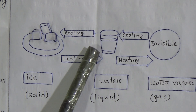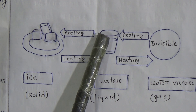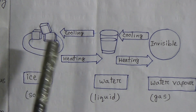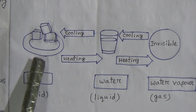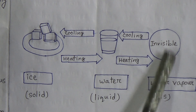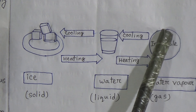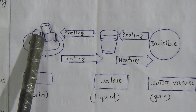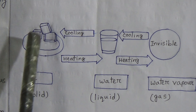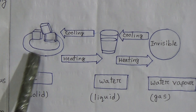And when we cool this liquid water, it is converted into ice — that means solid. So by heating, ice converts into liquid and then gas; and by cooling, gas converts into liquid water and then into solid ice. By this figure we can understand the three forms of water.